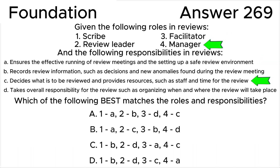Role four — manager — is responsible for deciding what needs to be reviewed and allocating resources, such as staff and time for the review. Manager corresponds to option C: decides what is to be reviewed and provides resources, such as staff and time for the review.